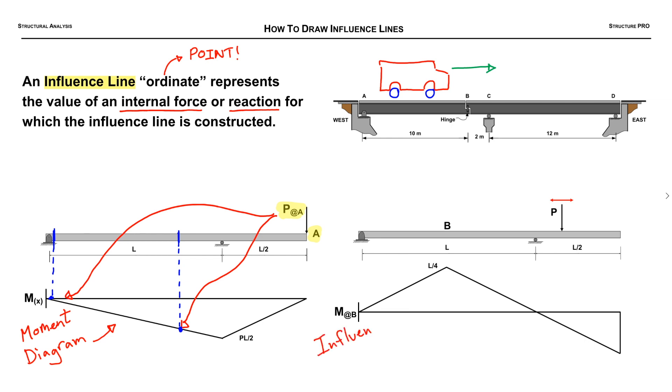Whereas an influence line, now the moment is at a specific point, alright? And the force can move around. So P is free to move all over the beam, and the ordinate right below P, that corresponds to the moment at this other spot, B, which is set for anywhere along the influence line.